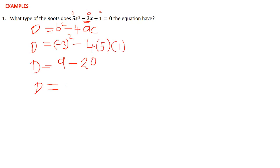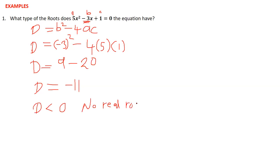So the discriminant is 9 minus 20, which gives us negative 11. This negative 11 is less than zero, so our discriminant is less than zero. If the discriminant is less than zero, it implies that the equation has no real roots.